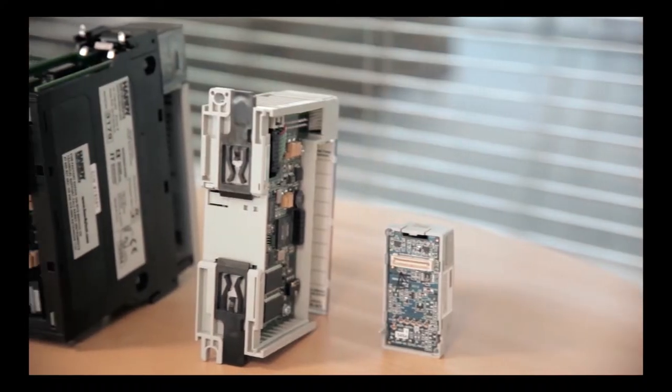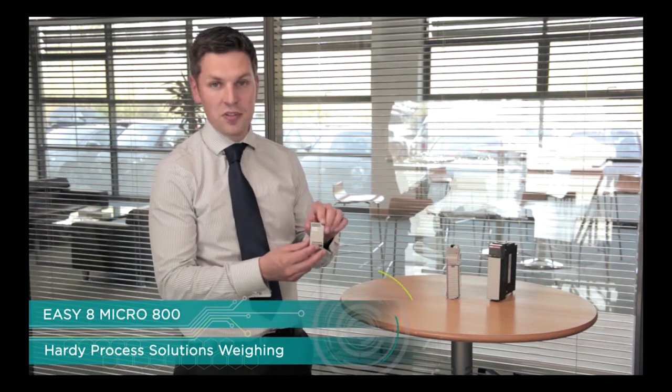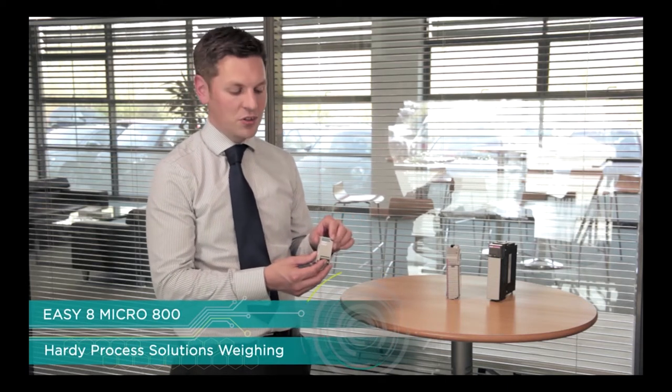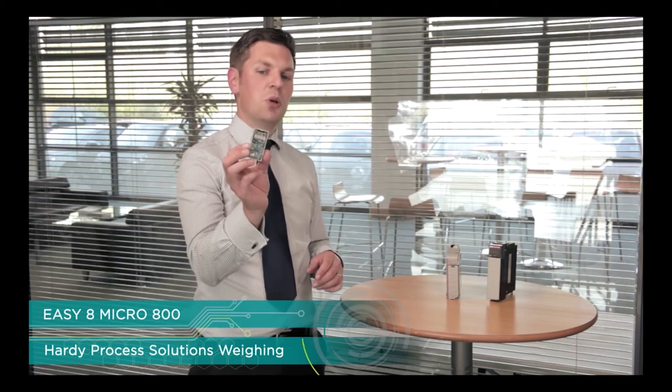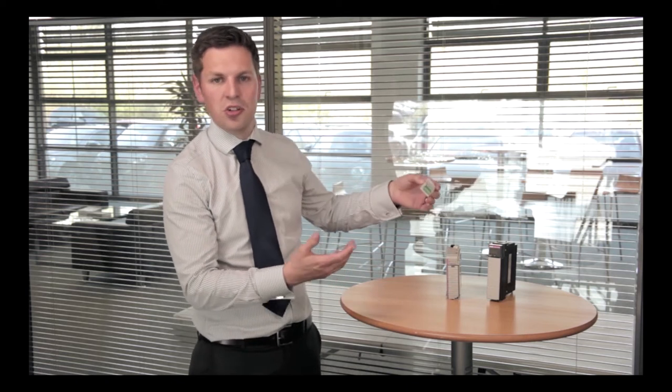We've got three in-rack solutions here from Hardy. I'm going to talk about the EZ8 module first. This fits the Micro 800 range of PLC and it's a small plug-in module, really easy to use. It plugs into the front of the PLC, doesn't matter which slot it goes into, it's not keyed. You can have a whole rack of them if you want to.